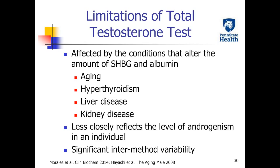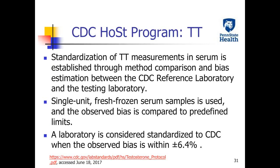The measurement of total testosterone is relatively easy, less expensive, and widely available. However, the concentration of total testosterone is affected by many factors that change the amount of sex hormone binding globulin and albumin — for example, aging, hyperthyroidism, liver, and kidney diseases. Also, compared to free and bioavailable testosterone, it less closely reflects the levels of androgenism in an individual. There is also significant inter-method variability.